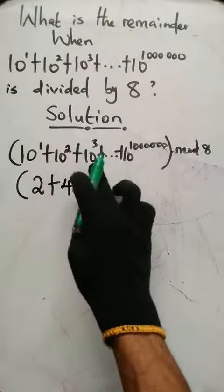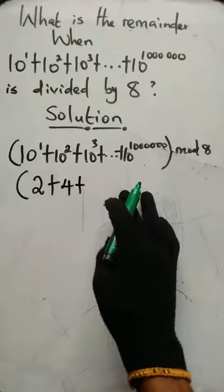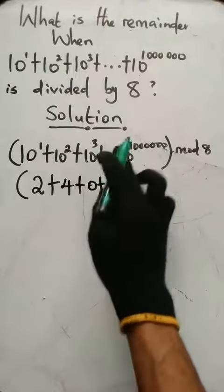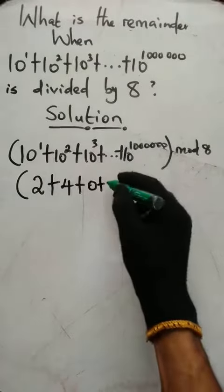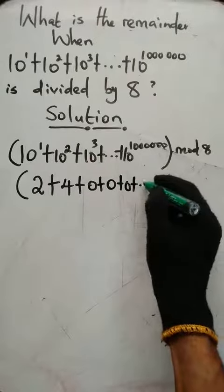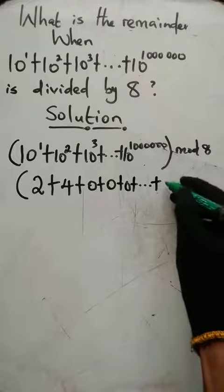Then plus 10 raised to power 3 is 1000 which is ending in three zeros, meaning 8 can divide 1000. So we have remainder 0. Then remember 10 raised to power 4 is 10,000 and so on, so we have remainder 0 plus 0 plus till 10 raised to power 1 million. When divided by 8, it will have remainder 0.